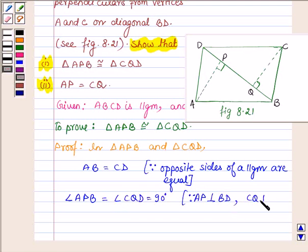And angle ABP is equal to angle CDQ since DC is parallel to AB.